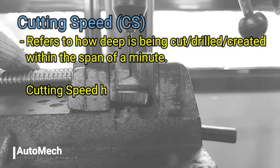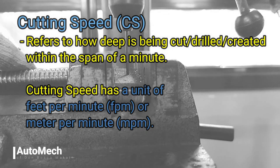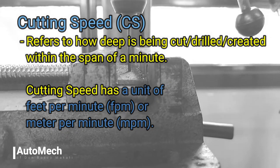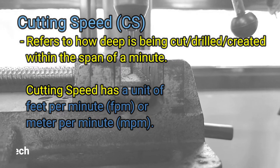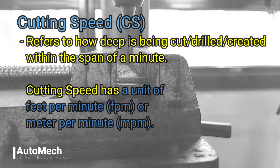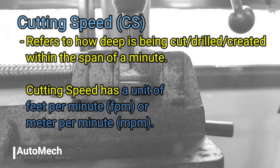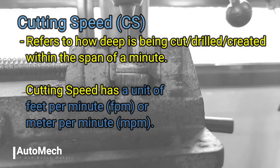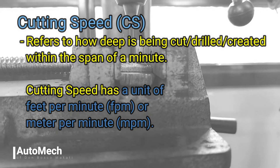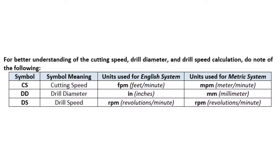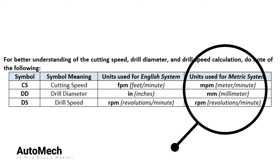Third is the cutting speed, or CS. This refers to how much surface distance is being cut or created within a minute, and its unit may be referred to as FPM or feet per minute, and MPM or meters per minute. Now that we know the factors needed to be considered during drilling operation, let's move on to how to calculate the cutting speed. For today, we will be focusing on the metric system.